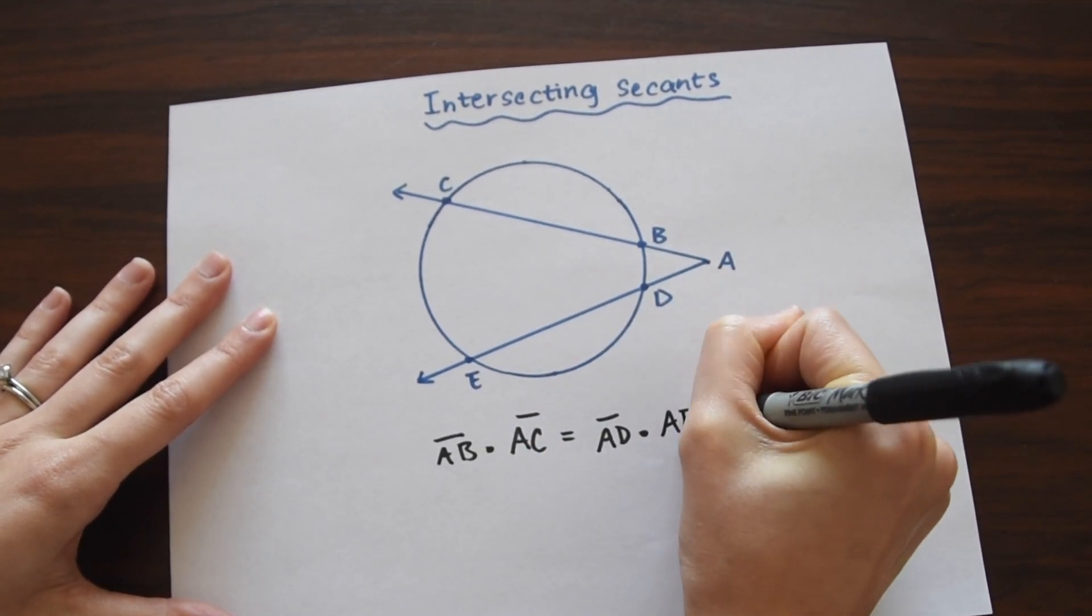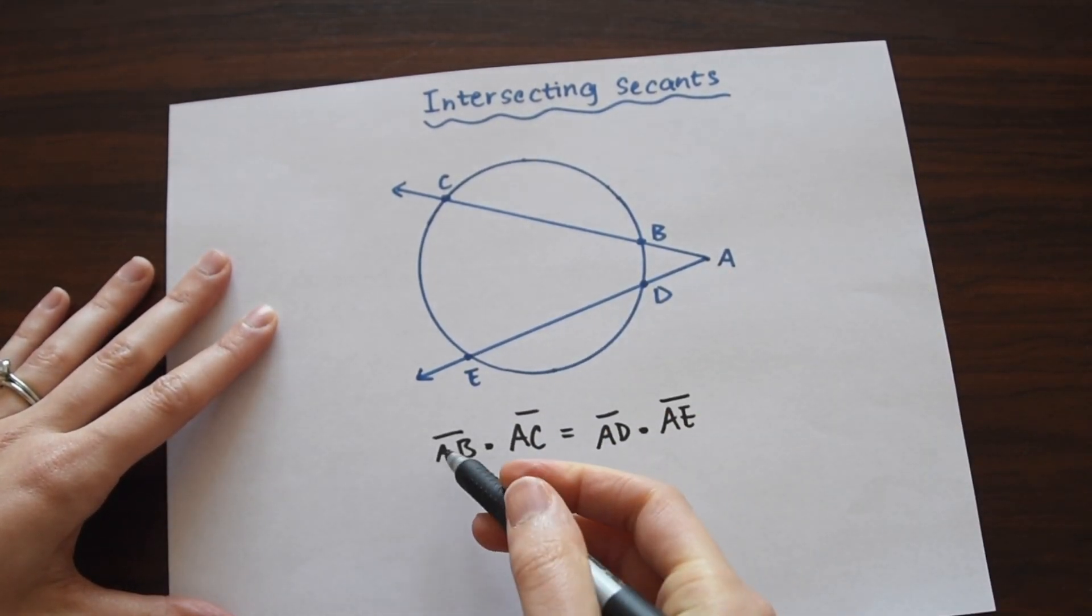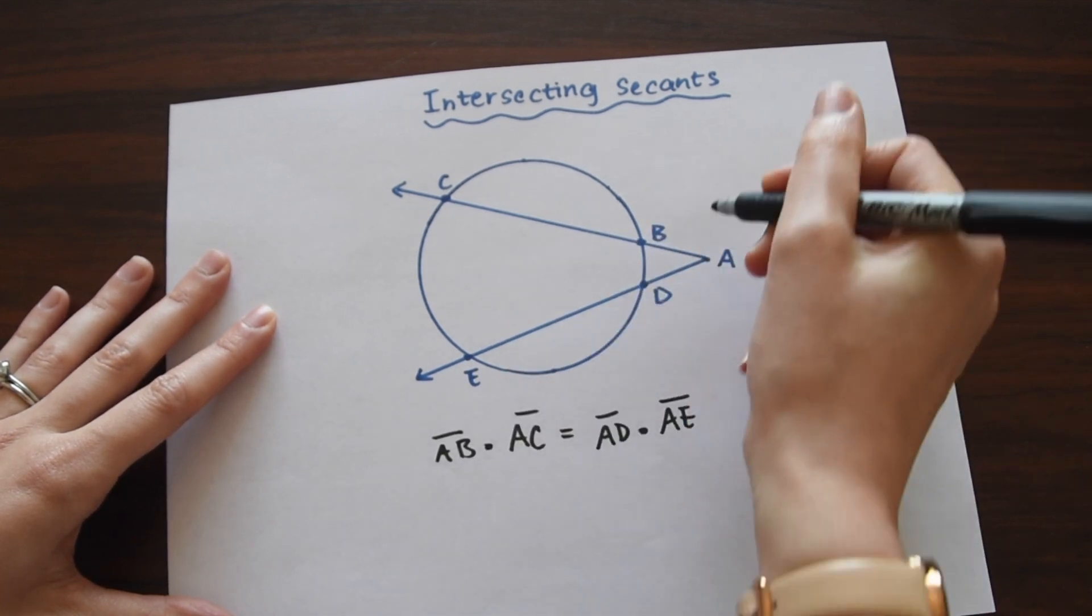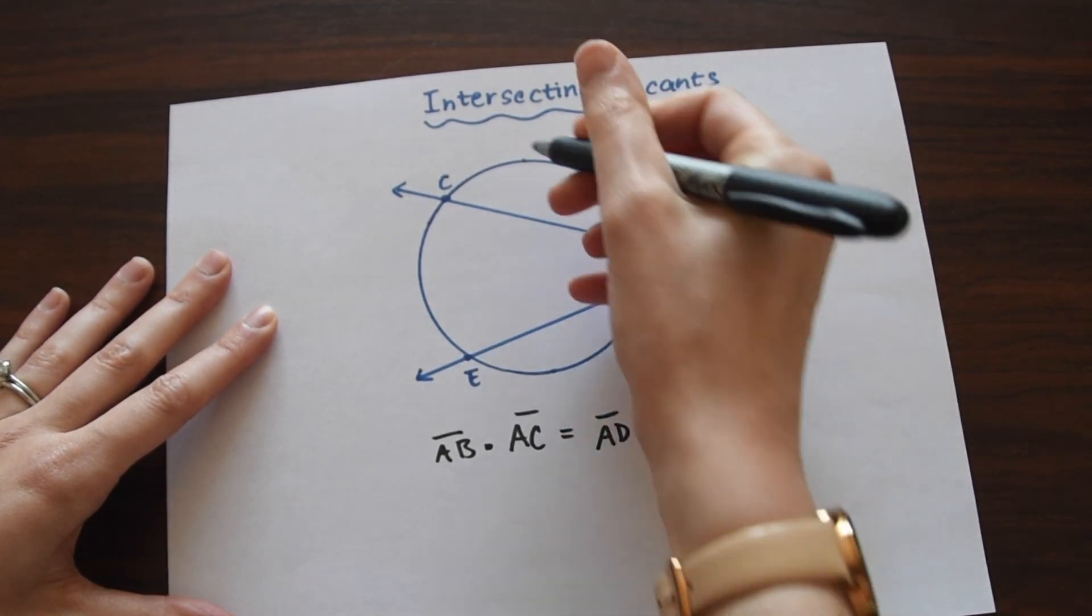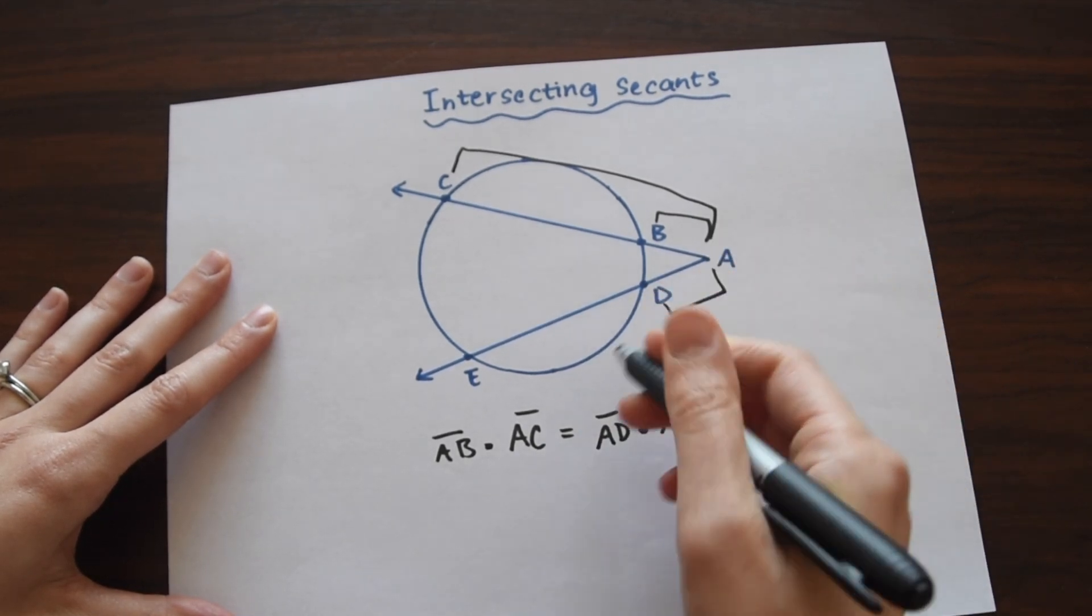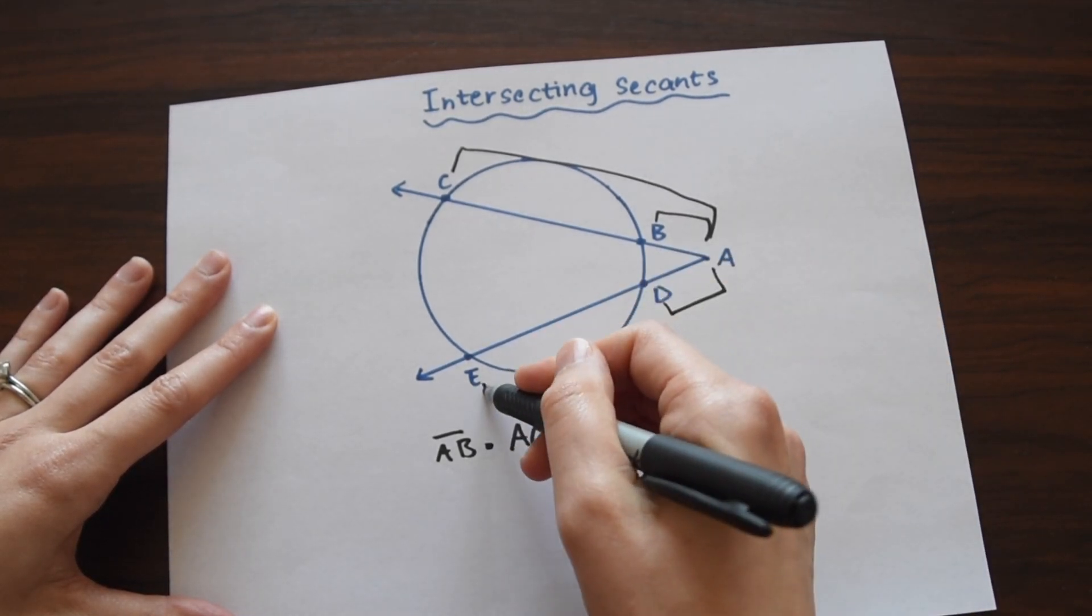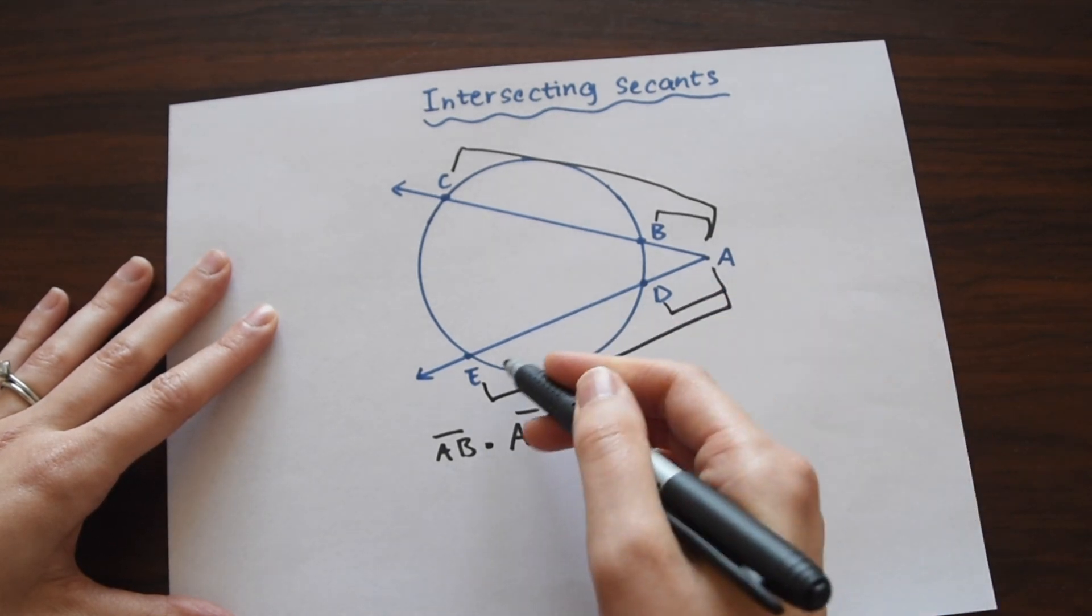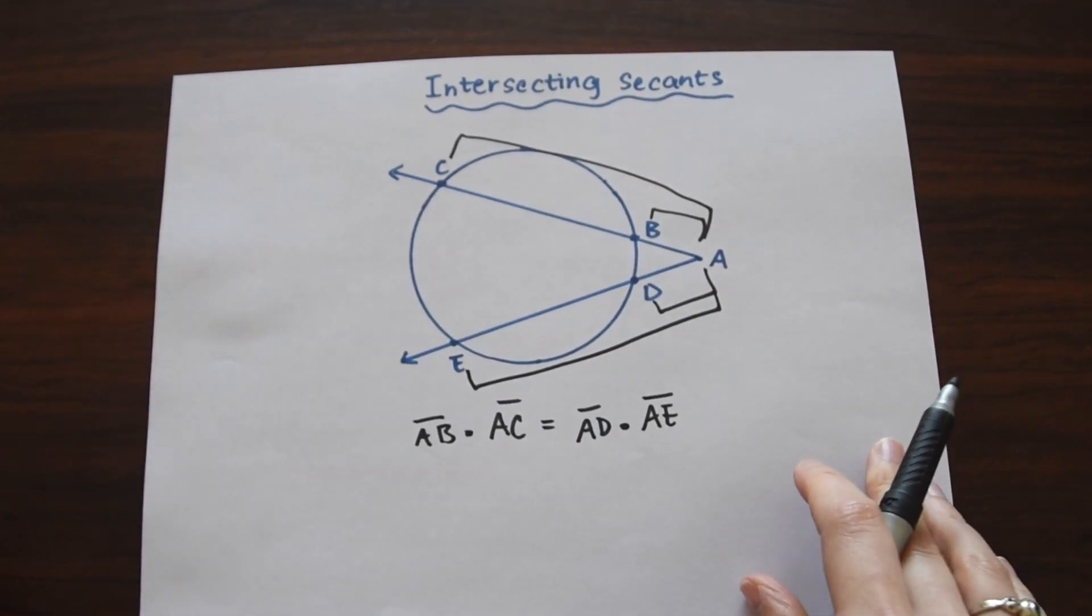So notice that AB is over here, times AC, so times this whole thing here. And this is equal to AD right here times the whole segment here AE. So that's our intersecting secants theorem.